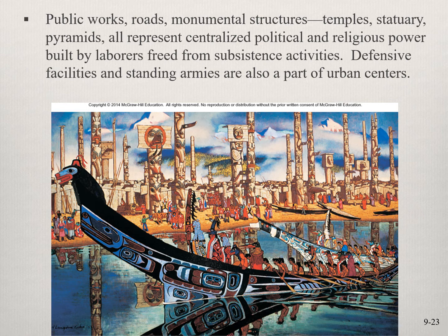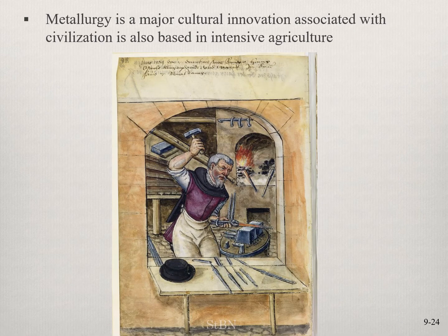Out of agriculture we also get public works: roads, monumental structures, temples, statuary, and pyramids — all representing centralized political and religious power. You have poor farmers working from dawn to dusk producing food, which frees up the rest of the population to do other things: build pottery, be full-time religious specialists. We get cities, and metallurgy forms a basis for our market economy while also producing more intense weapons. We get plows, plowshares, and better reaping devices.